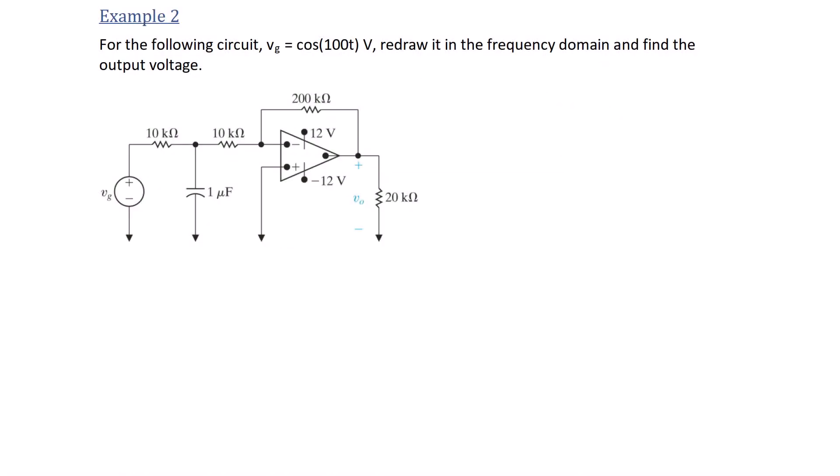Example 2: For the following circuit, Vg is equal to cosine 100t. Redraw the circuit in the frequency domain and find the output voltage. So omega is 100 radians per second. So we're going to take the circuit in the time domain and redraw it in the frequency domain, where the source voltage is 1 angle 0.